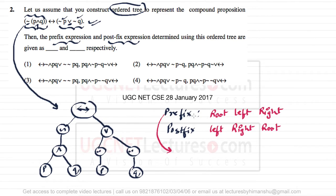For this example, to find the prefix expression we print root, then left, then right. If you don't understand how I am finding prefix and postfix expressions, you can go to the video lectures on data structures where I have covered how to traverse a binary tree, including prefix, postfix, and infix expressions. You can go through that topic and come back here.